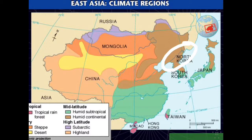In January, the temperatures are typically negative 3 degrees Celsius and negative 13 degrees Celsius. The average snowfall spans approximately 37 days during the winter.